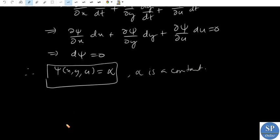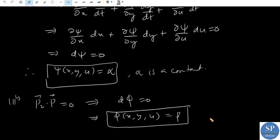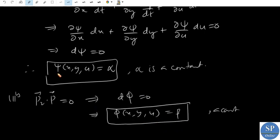Similarly, from p2·p = 0 we get dφ = 0 in a similar way, so φ(x, y, u) = β, a constant. Therefore ψ and φ are constants on every characteristic curve. Therefore ψ = α and φ = β form the required two-parameter family of integral surfaces. Using these functions ψ and φ, we can write the solution of the given PDE as f(ψ, φ) = 0.